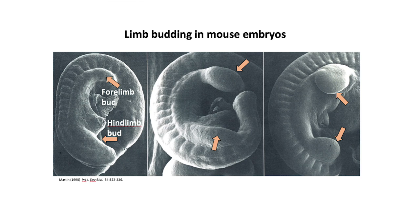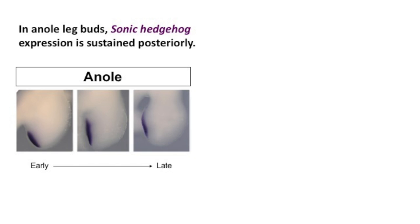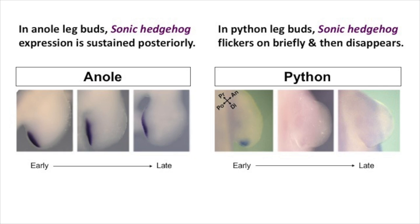We know that the earliest sign of limb development is the emergence of a pair of buds at the site of the future arms and the site of the future legs. If we compare the sonic hedgehog expression in an anole lizard with a python, you can see that in the anole, the hedgehog expression comes on in the early limb bud and stays on, and that's driving outgrowth and development of the skeleton.